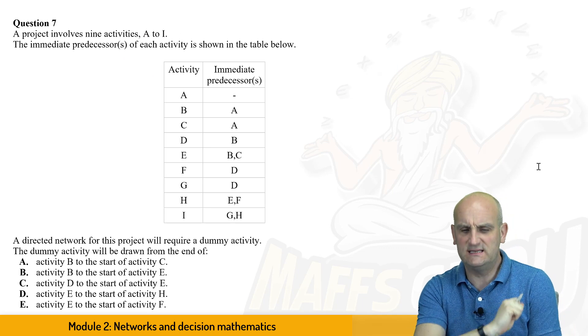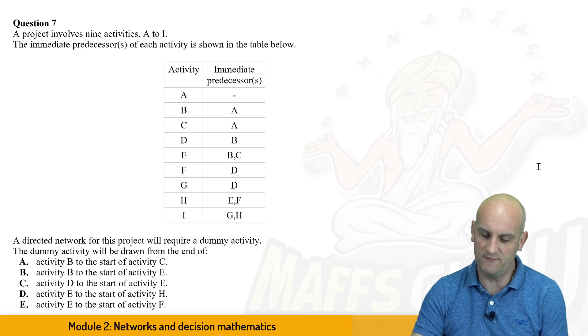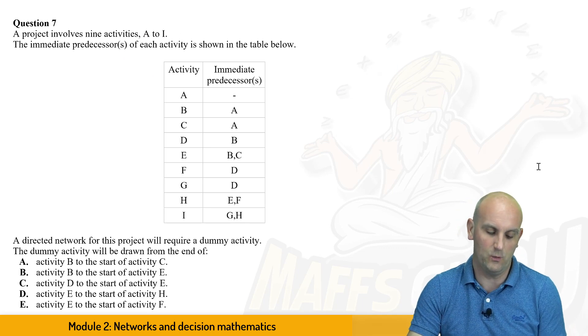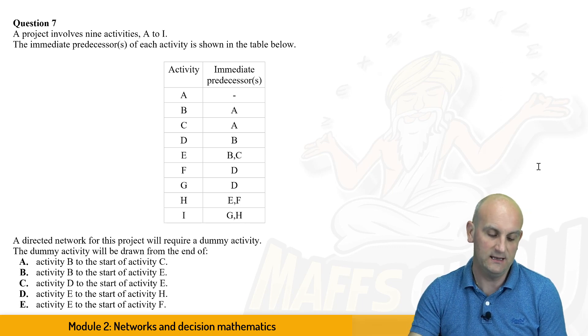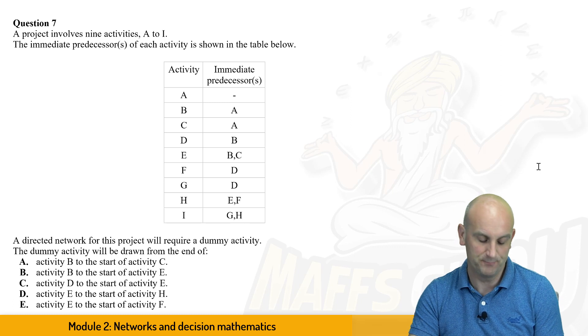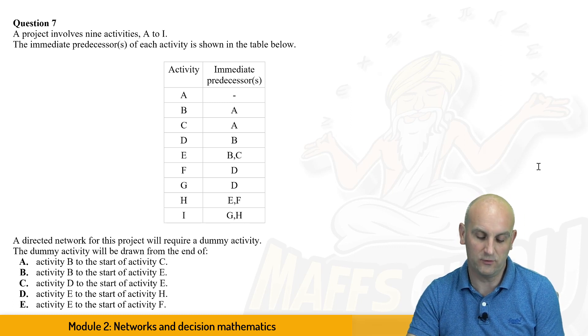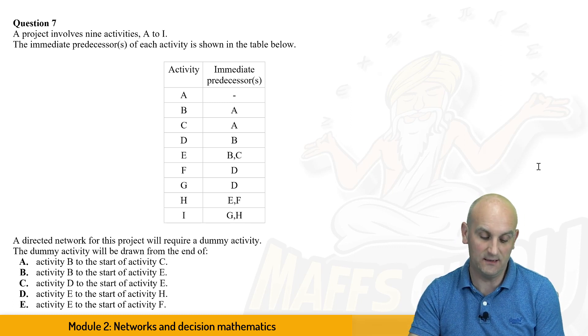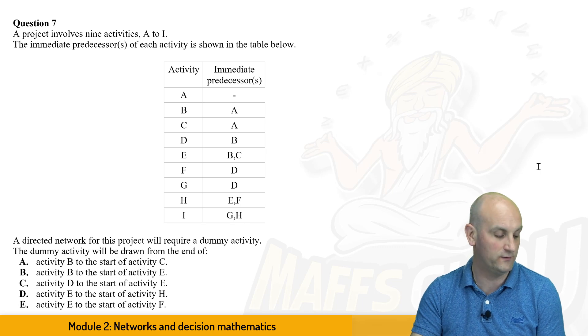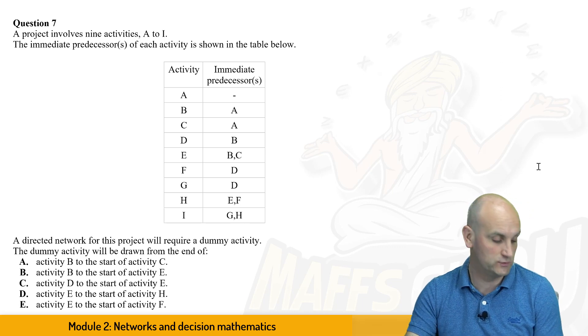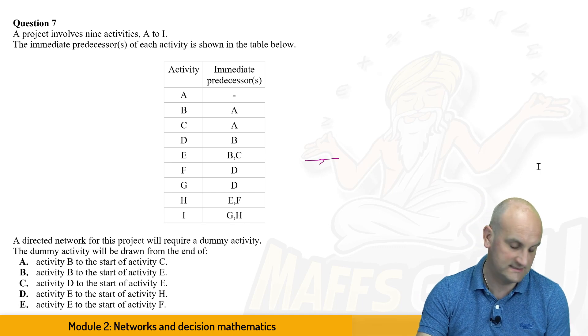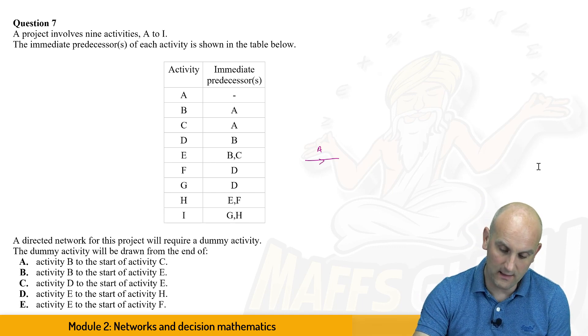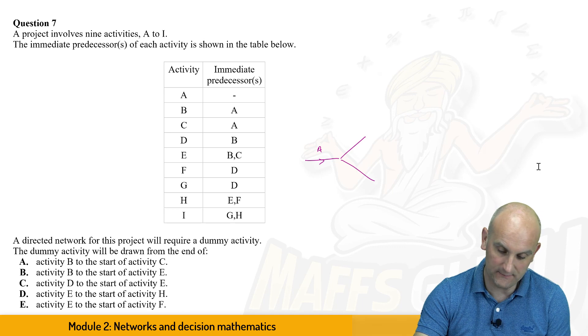And so, for some reason, my scanner would not scan this question, so I've had to type it up if it looks a little bit different. Don't worry about it. So we've got a project involving nine activities, A to I, and the immediate predecessors are all shown in this. So a directed network for the project will require a dummy activity, and the dummy activity will be drawn from the end of. Well, the first thing is, what I've done is I've drawn this out, and I know that I've got the start here, which is A, and then I've got B and C coming off of here.